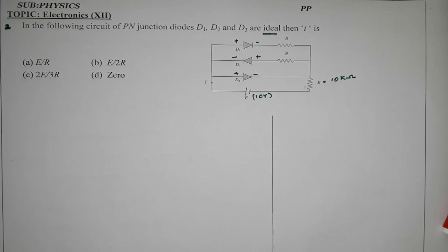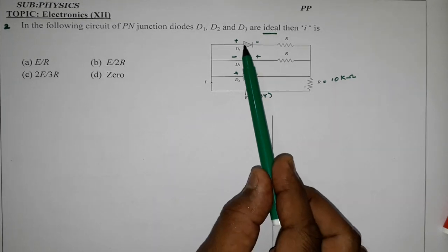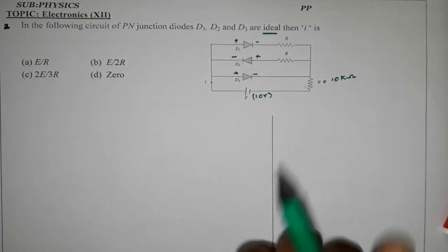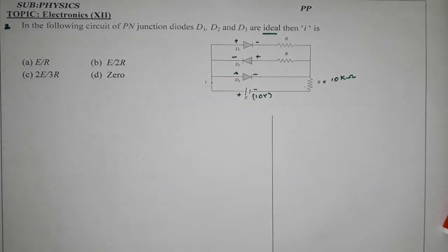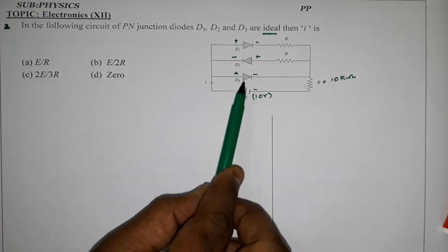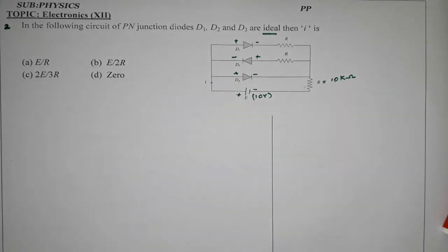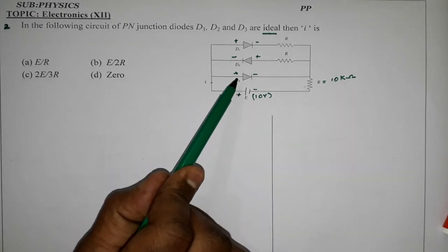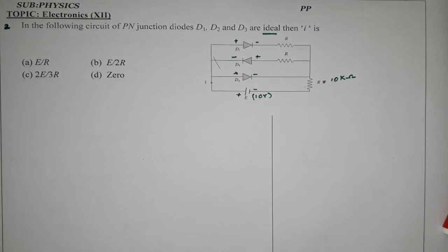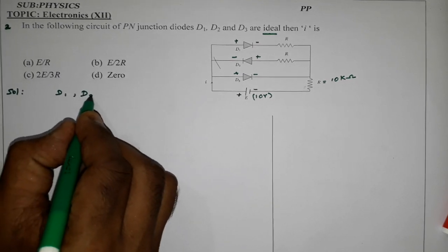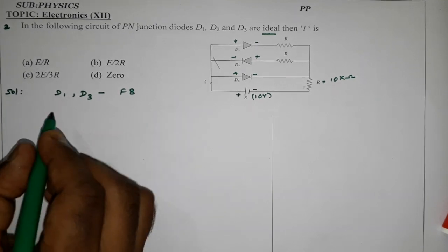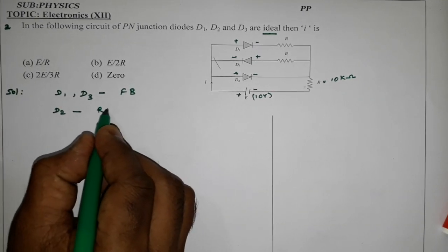Then find the current in the circuit. There are 3 diodes: 1, 2, 3. This is the positive terminal and this is the negative terminal. The diodes D1 and D3 are in forward bias. D2 is in reverse bias.